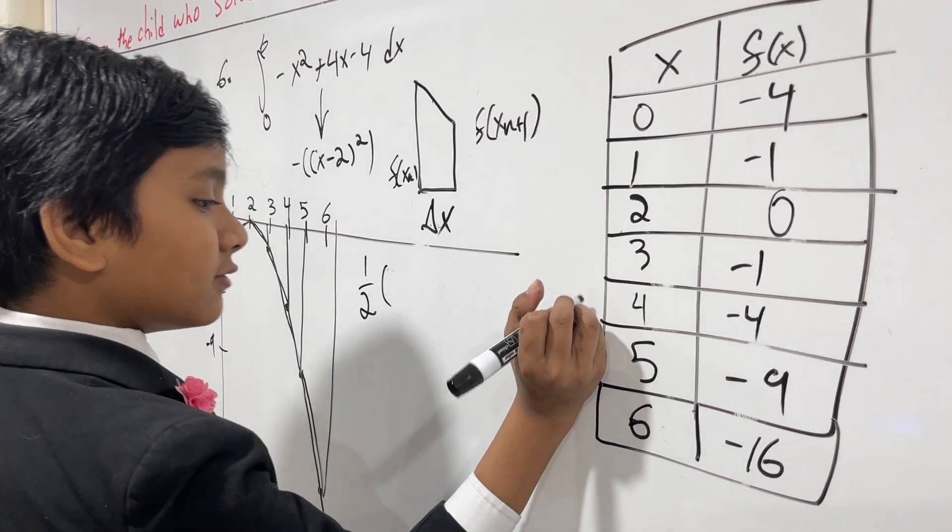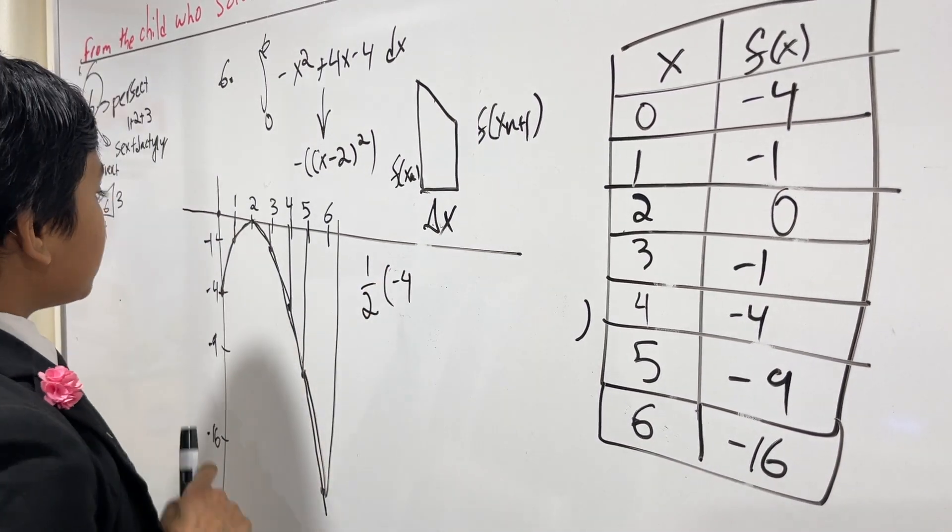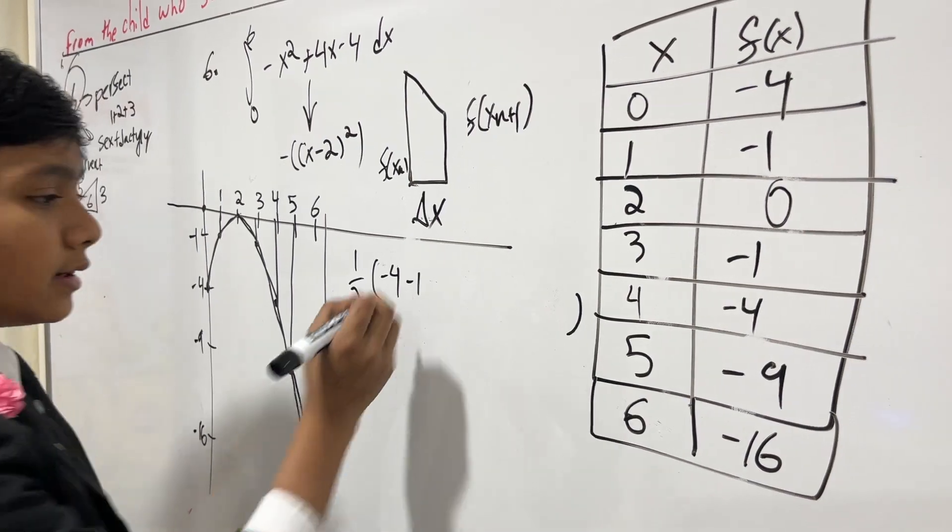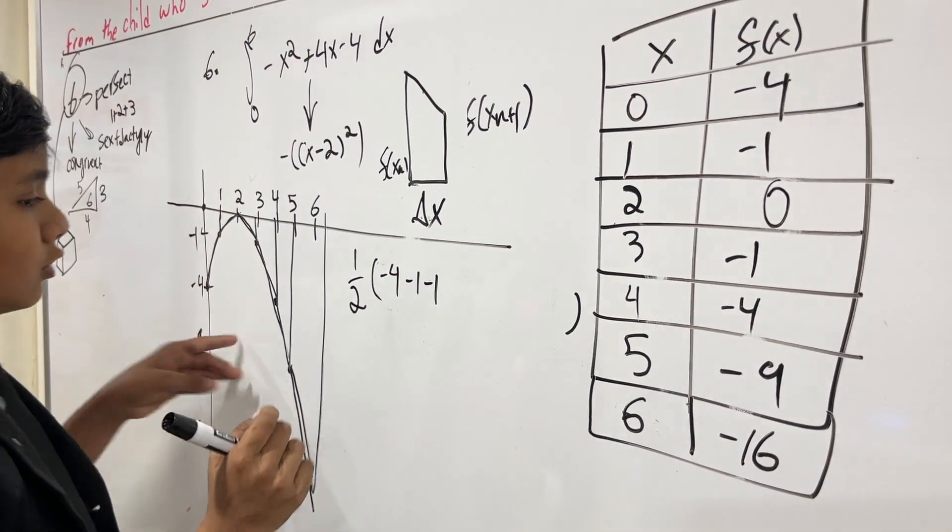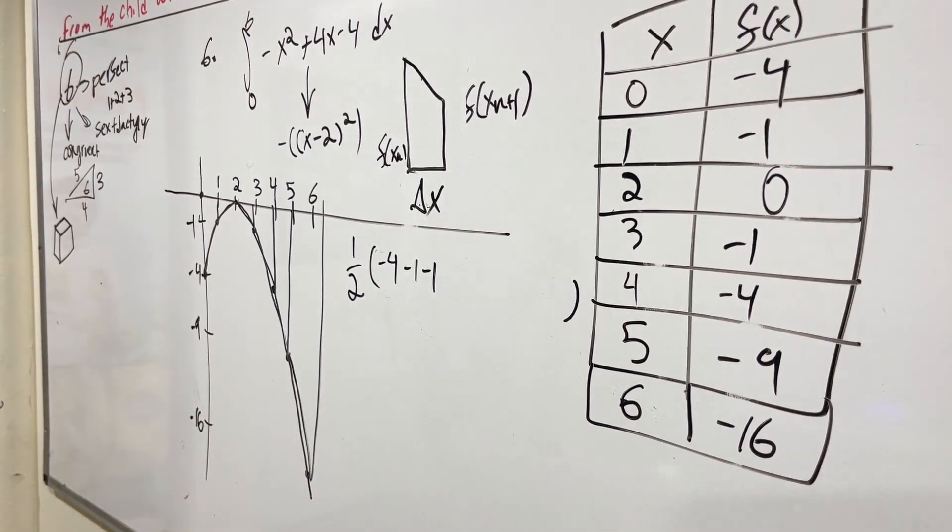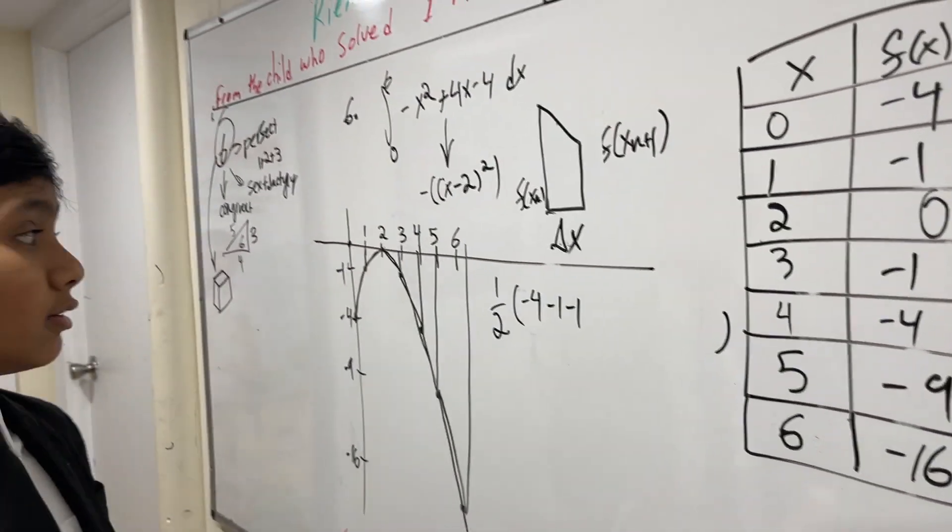So what's f(0)? Well, f(0) is minus four. What's f(1)? Well, f(1) is minus one. What's f(1) again? Well, it's minus one. What's f(2)? Zero. And we don't need to write that. What's f(2) again? Also zero, so we don't need to write that.